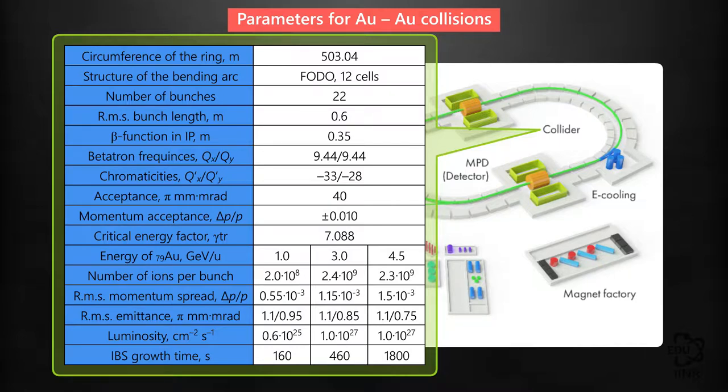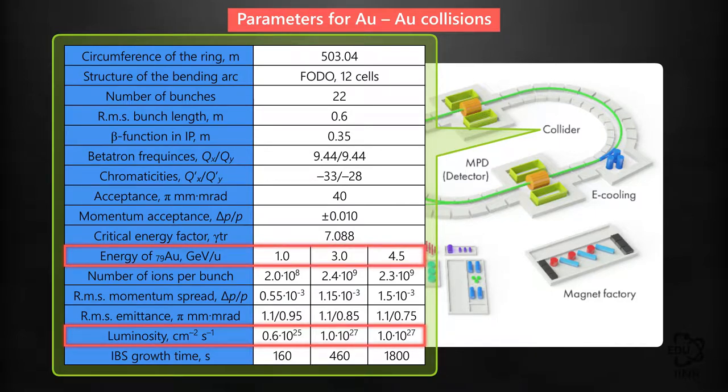Accordingly, an injection chain and accumulation scheme make it possible to provide such changes in bunch intensity, whereas our designed luminosity of 10 to the power of 27 falls in the most interesting energy range, approximately 3 to 4.5 GeV per nucleon.